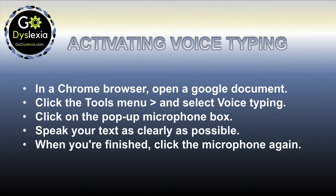There are some steps you have to go through in order to activate voice typing. First, you have to have the Chrome browser, then open a Google Doc. Then click on the Tools menu and select Voice Typing. After that, click on the pop-up microphone box that will appear on the screen. Then speak your text as clearly as possible. Finally, when you're finished, click the microphone again.